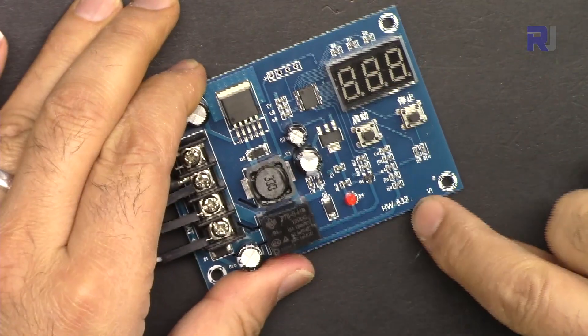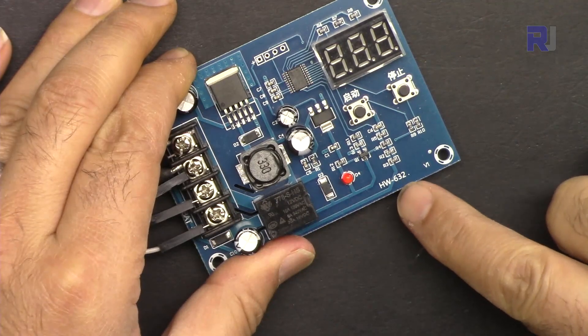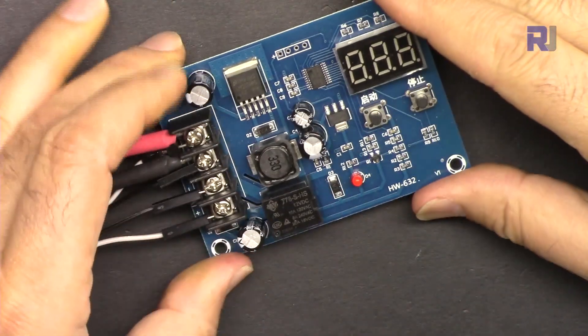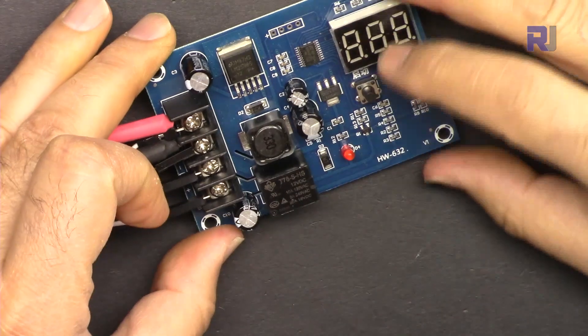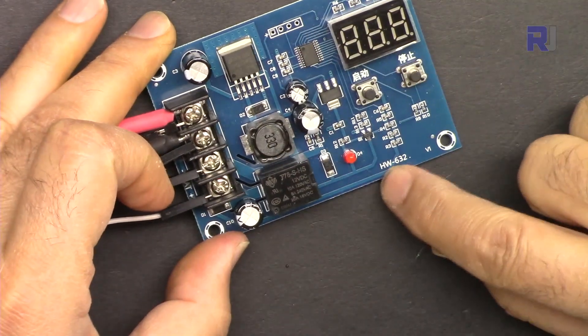However, the module that I received is HW632, so it seems that somebody has copied this and everybody is producing it. The shape and everything is the same except this text here.